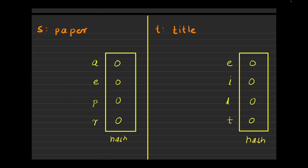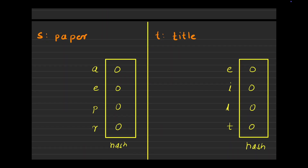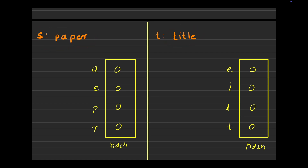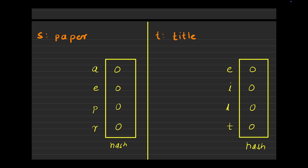Now let's understand how we can approach this problem. I've taken the example of 'paper' and 'title'. We have two strings S and T, and I have maintained two hash maps — one hash maintains which character of S is mapped to which character of T. The question is: why can't we use a single hash? Why are we using two different hash maps for the two different strings?